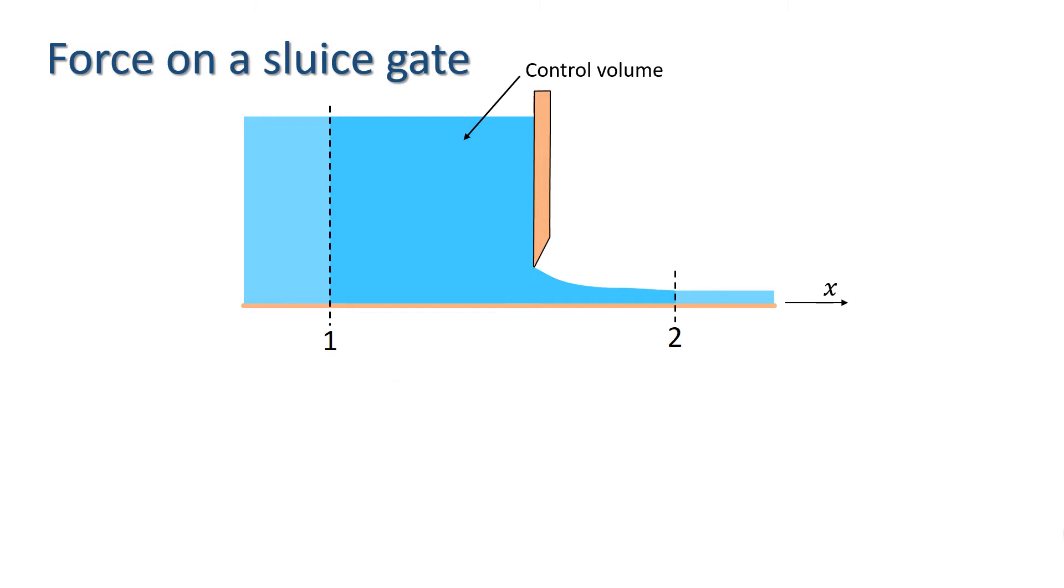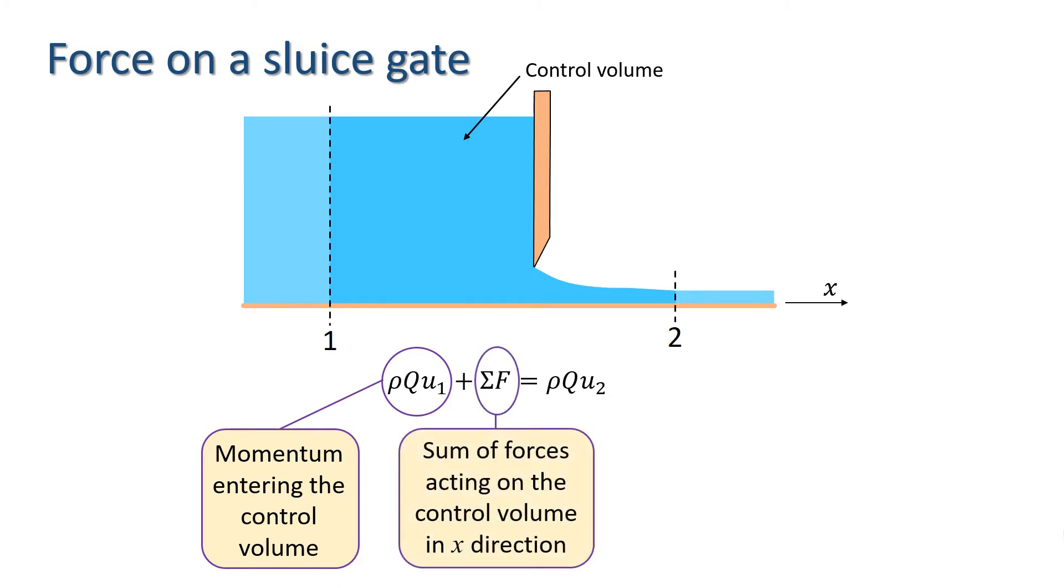The momentum equation tells us that the momentum entering the control volume through cross-section 1 plus the sum of all the forces acting on the control volume of water equals the momentum leaving the control volume at cross-section 2.